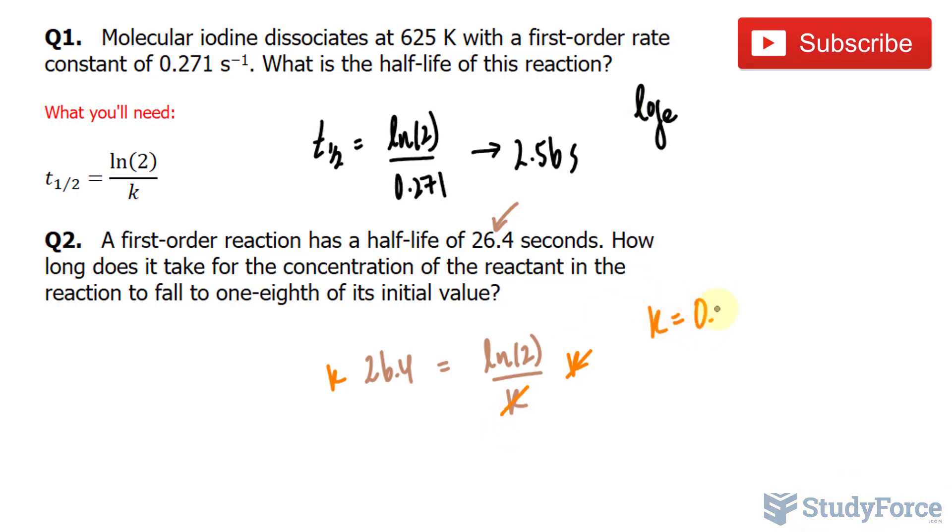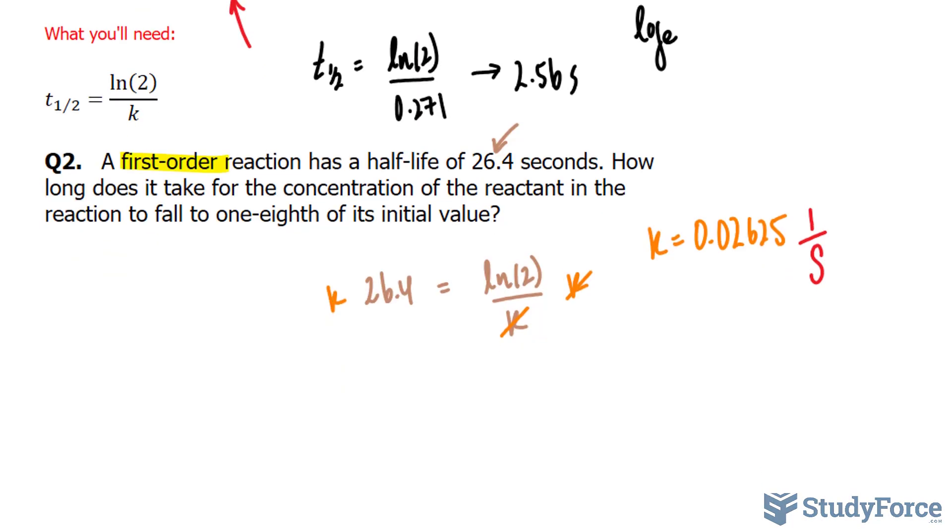So K is equal to 0.02625 and since this is a first order reaction, the units are going to be one over S, which is the same thing as S raised to the power of negative one. The reason why we want this is because for first order reactions, you need the constant multiplied to the independent variable being your time.